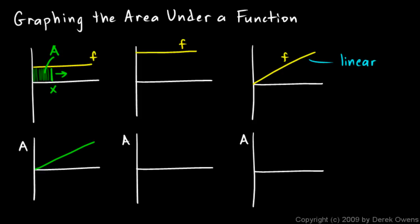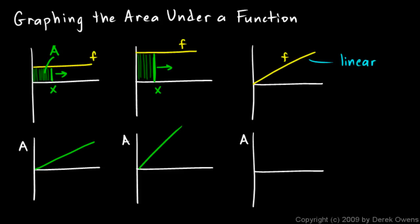Now let's look at the second one. This is exactly the same, only my value of f is a little bit bigger. Once again, imagine a line here starting at 0 and moving to the right. As it goes further and further to the right, there's more and more area enclosed behind it. This area is increasing at a faster rate than in the first case, because the value of f is higher. So this graph down here is also going to be increasing in a linear fashion, but it's going to be steeper.